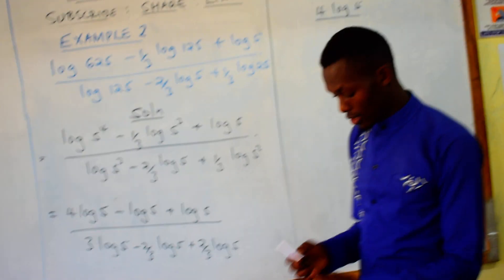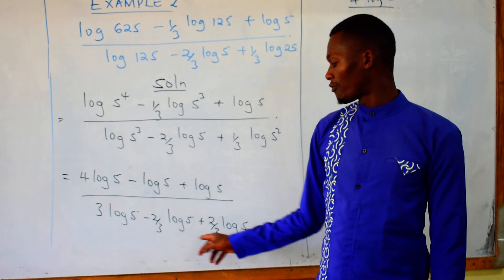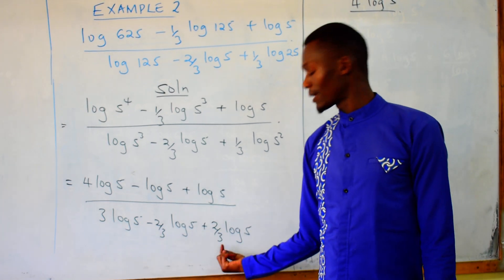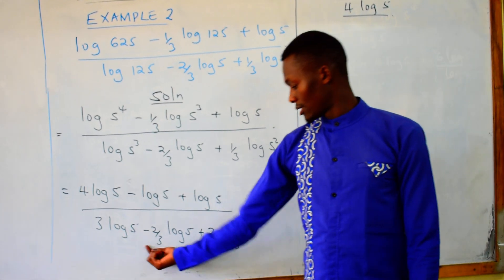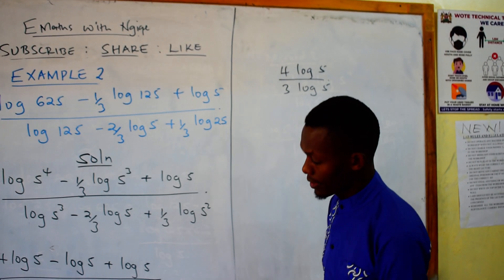Then, come to the denominator. 3 log of 5 minus two over three log of 5 plus two over three. So minus two over three plus two over three, that is 0. These become 0. So we remain with 3 log of 5.